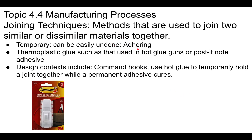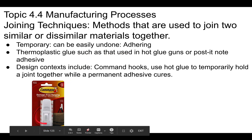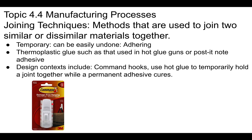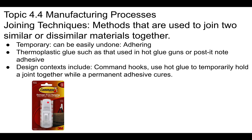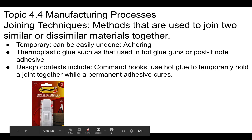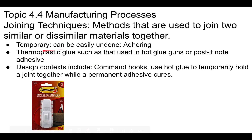You can also have temporary adhesives. A command strip hook allows you to put a hook on the wall without damaging it — you pull the tabs and it pops off, a bit like a post-it note. Hot glue guns are also a type of temporary adhesive because you can easily take them apart. Those are examples of temporary joining techniques using adhesives.